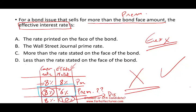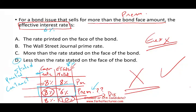So answer D gives us this: less than the rate stated on the bond. The rate stated on the bond is 8%, so you're offering 8%, and the effective rate is 6%. The effective rate — 6% is less than 8% — so the bond will sell at a premium because you're offering more. The stated rate is also called the coupon rate, the printed rate, or the contract rate — they all mean the same thing. So you have to understand this grid and build up on this knowledge.